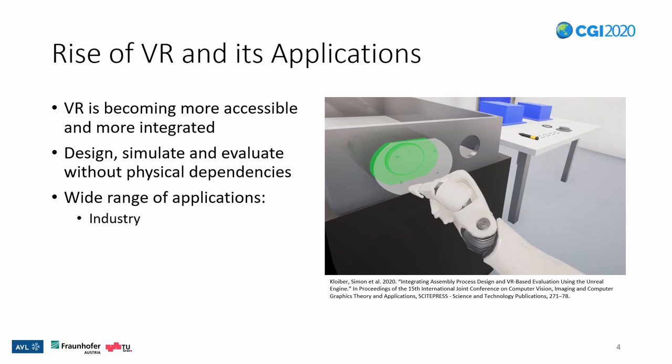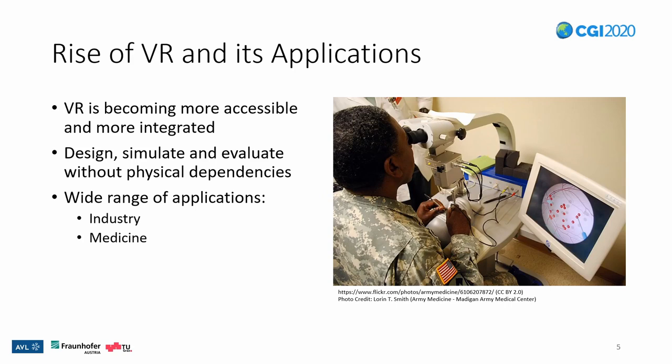For example, in industry, workers can be trained virtually for an assembly, thus reducing the needed time in a physical training setup. Furthermore, processes and designs can be evaluated without the need for physical prototypes. Another example is medicine, where doctors can be trained virtually without the need for props or consequences for mistakes. In the shown image, a resident with the ophthalmology clinic uses the virtual reality simulator for warm-up and to tone hand, eye, and foot coordination.